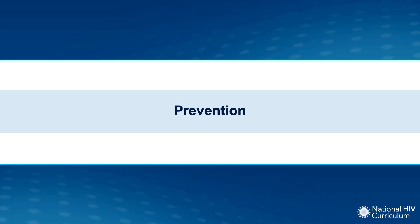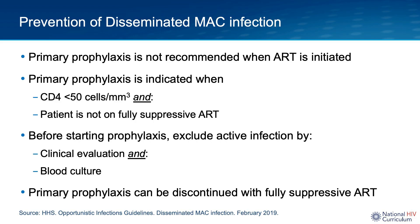There is no way to prevent environmental exposure to MAC organisms given how widespread they are in our surroundings. Primary prophylaxis against disseminated MAC is not recommended for adults and adolescents with HIV who immediately initiate ART. This recommendation is based on data from observational cohort studies finding no benefit in starting MAC prophylaxis in persons with a CD4 count less than 50 if they promptly started ART and achieved virologic suppression. Those not receiving ART, or who are viremic on ART with no fully suppressive options, should receive chemoprophylaxis if they have a CD4 count less than 50.